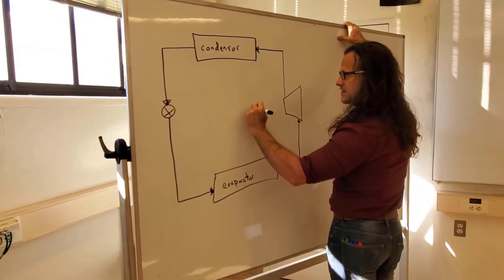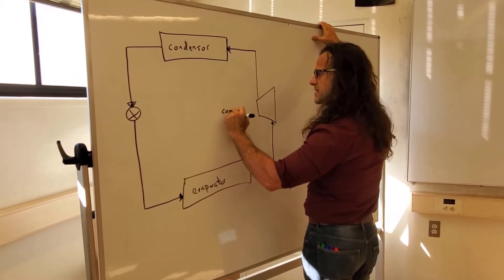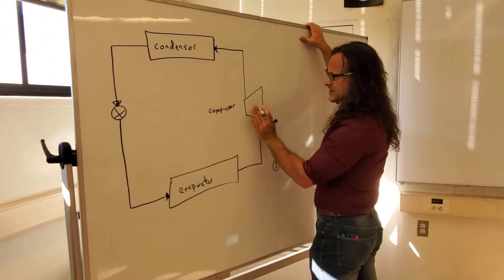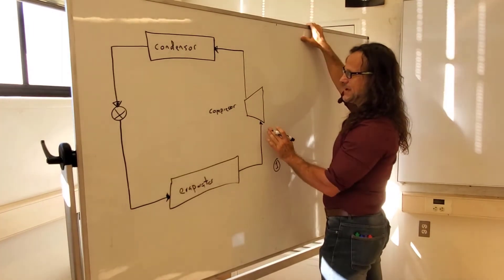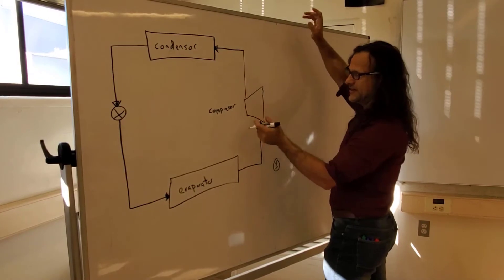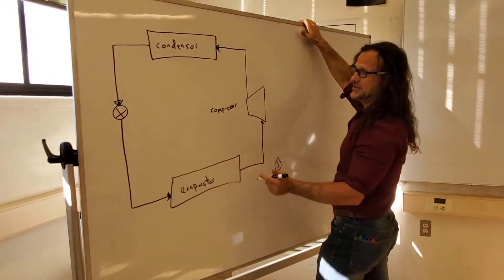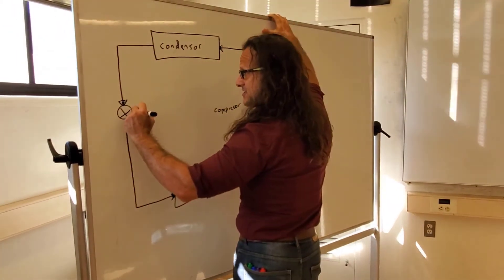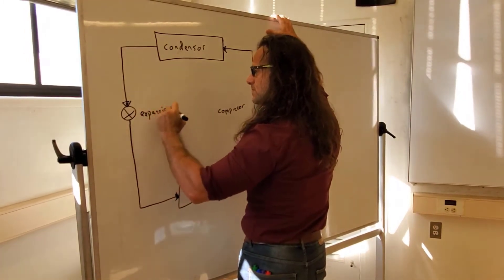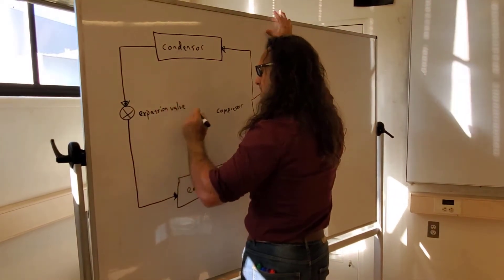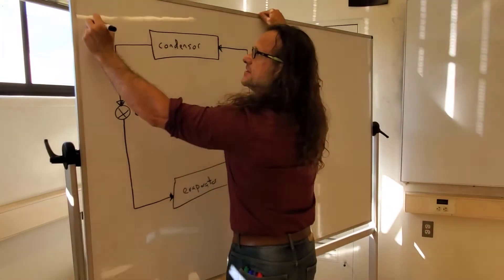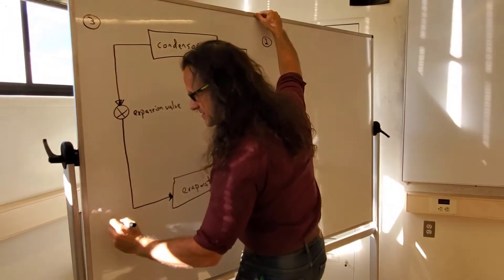I'll write compressor in here. The compressor is pretty easy to tell from the drawing — you're coming in from a larger volume to a smaller volume. Evaporator and condenser look exactly the same, so you need the labels. This is our expansion valve. So this is 0.1, then we'll call this 0.2, this 0.3, and this 0.4.